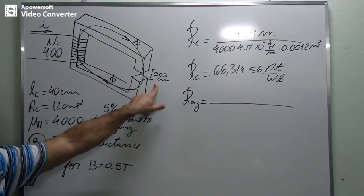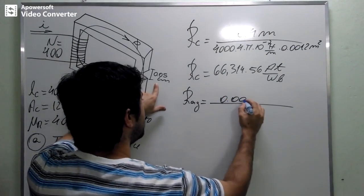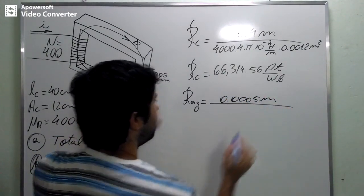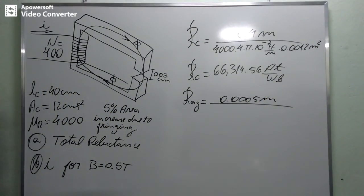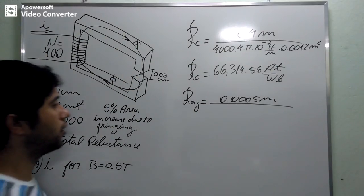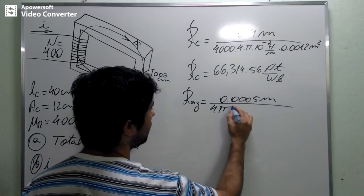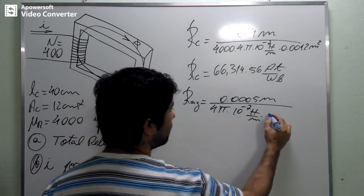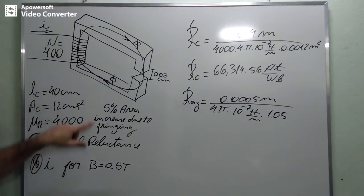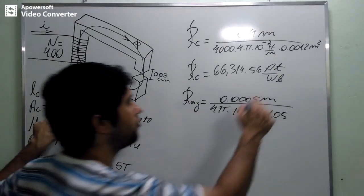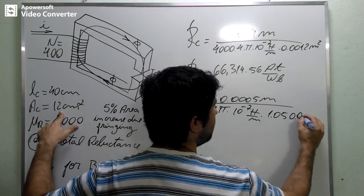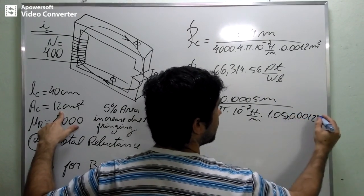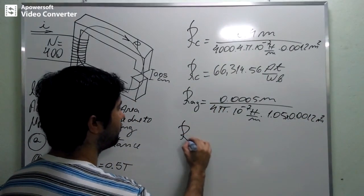Then, 0.05 centimeters become 0.0005 meters. We have to convert it to meters. And the air gap has the permeability of free space, 4π times 10 to the minus 7 Henry per meter. Then, we have to multiply it by 1.05 because of this, and then we multiply it by this area here, the cross-sectional area just like we did there, 0.0012 meters squared.